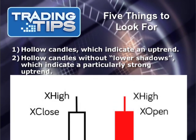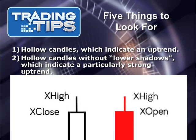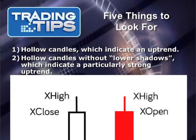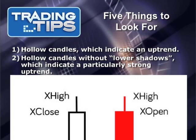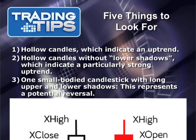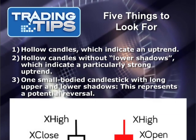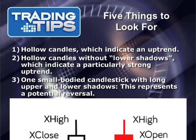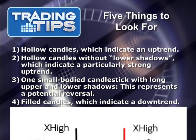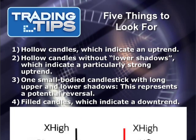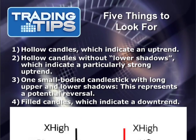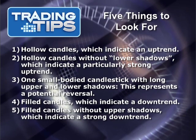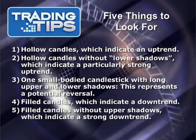Number three: one small body candlestick with a long upper and lower shadow — this represents a potential reversal. Number four: filled candles, which represent a downtrend. Number five: filled candles without upper shadows, which indicate a strong downtrend.